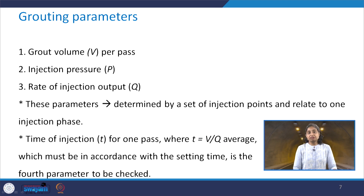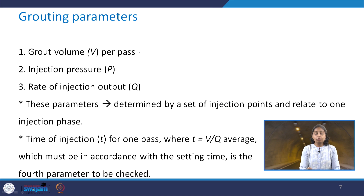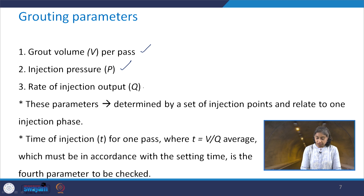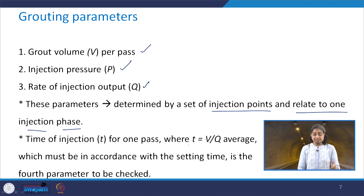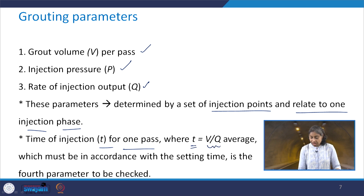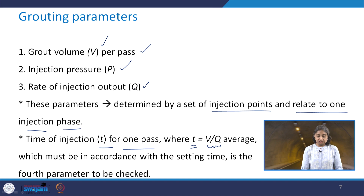Some grouting parameters one should be aware of: the first is the grout volume V per pass; the second is the injection pressure represented by capital P; and the third is the rate of injection output Q. All these parameters can be determined by the set of injection points and relate to one injection phase. The fourth parameter is the time of injection T for one pass, where T is defined as V divided by Q average — V being the grout volume per pass and Q the rate of injection output.